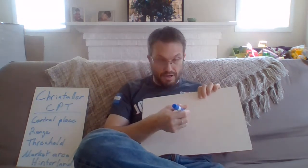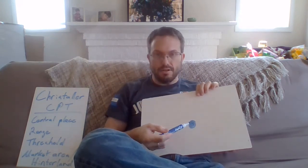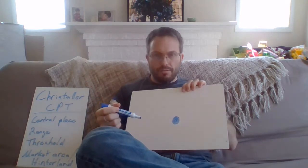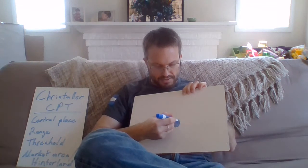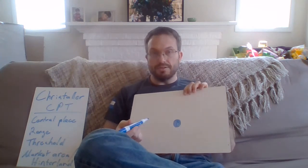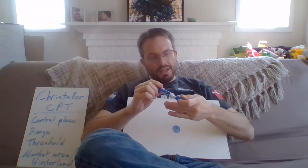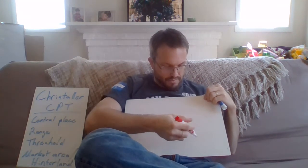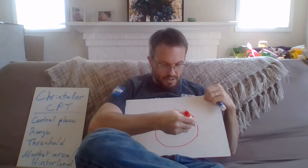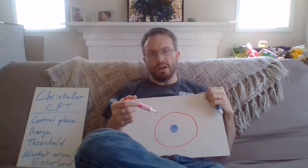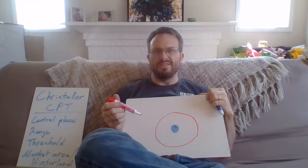The way central place theory works is it functions around obviously a central place. The idea is this particular central place is big, but there are different sizes of central places and they all fit together, forming a network of different access to services depending on what the need of the service is. For our demonstration, let's say this is the biggest central place around, which for us here in Silverdale would be Seattle. The idea of central place theory is that every central place has its own market area — the area from which it draws customers or consumers. For a big city, that market area would be very big because of the different levels of services they offer.